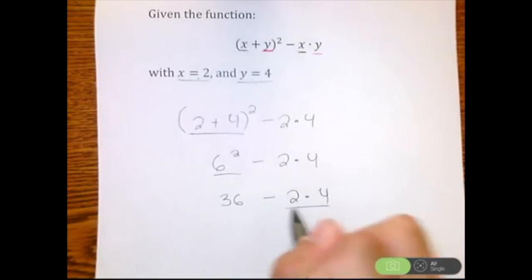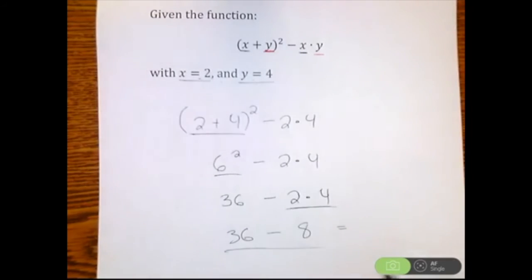After that, multiplication, division. So I have 2 times 4, which is 8. Didn't touch the 36 or the minus. And then finally, I'm left with 36 minus 8, which is 28.